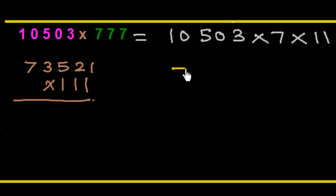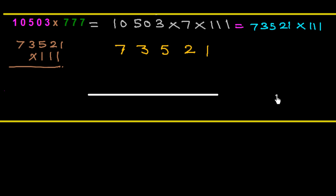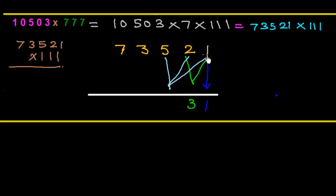We write 73521 and draw a line under it to multiply by 111. Since 111 has three digits, we add a maximum of three numbers at a time. First write 1. Then 2 + 1 = 3. Then, taking three digits at a time: 5 + 2 + 1 = 8, write 8.